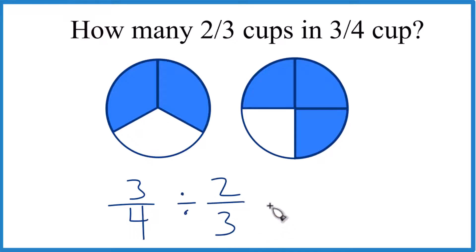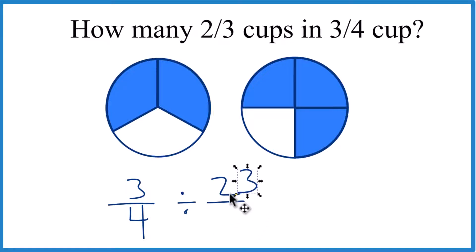The way to make this a lot easier is to take the three up here and the two down here. So three over two, that's the reciprocal of two-thirds. Because now, instead of this division here, we're just going to multiply.